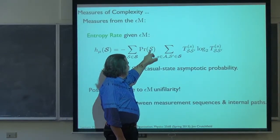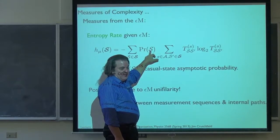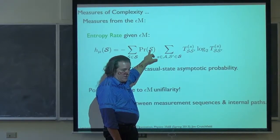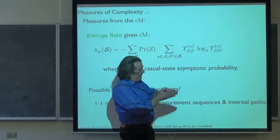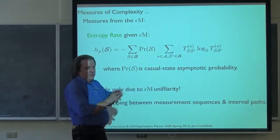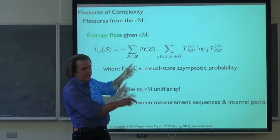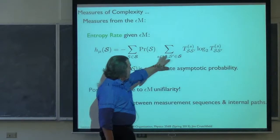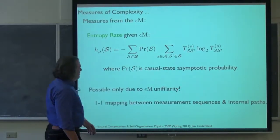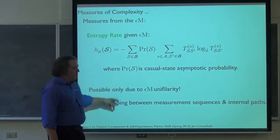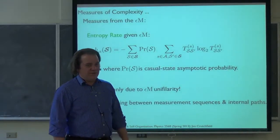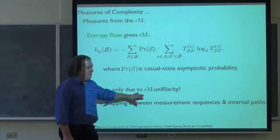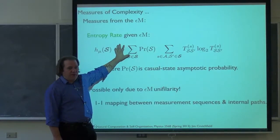The entropy rate given the epsilon machine is this state-average causal-state branching uncertainty. We go to each state, having calculated the probability of the causal states. If there are any transient states, those will have zero probability asymptotically, so this is really just summing over the recurrent states. We go to each state and look at how uncertain we are in observing the next symbol. Since it's unifilar, that's equivalent to uncertainty in going to the next state.